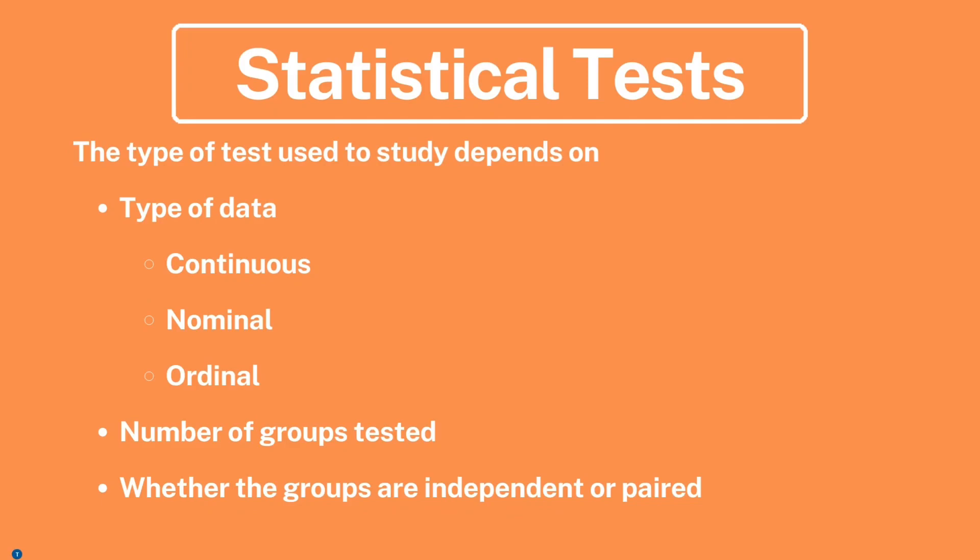Continuous data, such as height or temperature, often calls for parametric tests like t-tests or ANOVA. Nominal data, representing categories without inherent order such as colors, typically require non-parametric tests like the chi-square test. Ordinal data, which includes ranked categories such as pain scales, often involves non-parametric tests as well. Another vital consideration is the number of groups being compared. If there are more than two groups, analysis of variance (ANOVA) or its non-parametric counterpart, the Kruskal-Wallis test, may be appropriate.